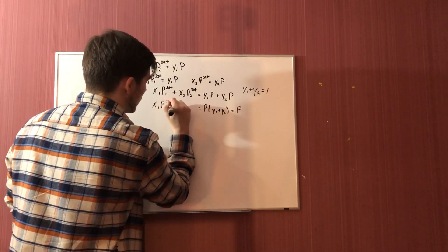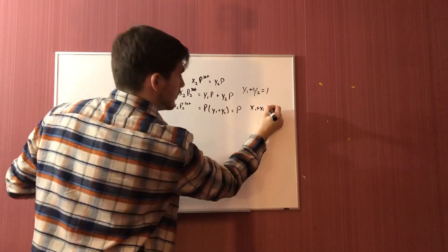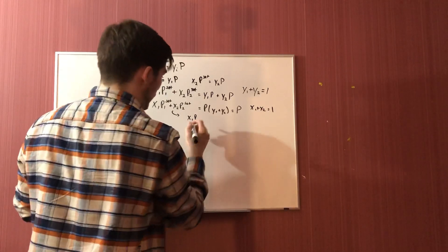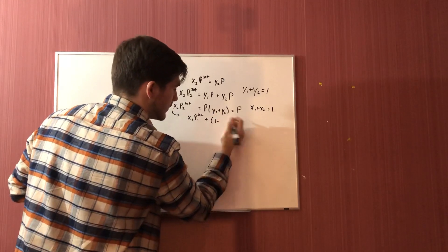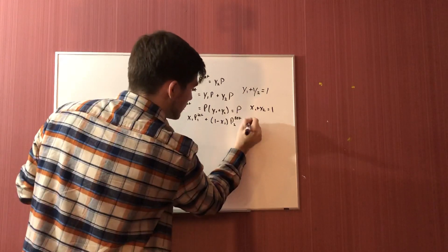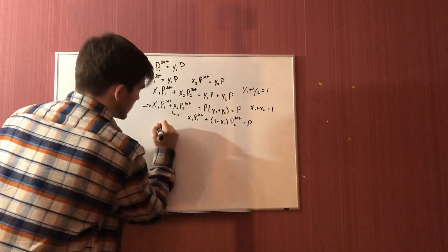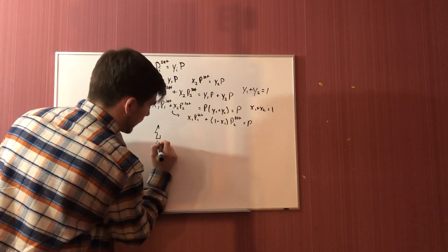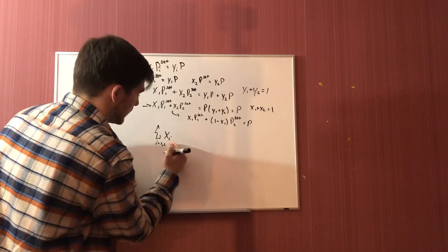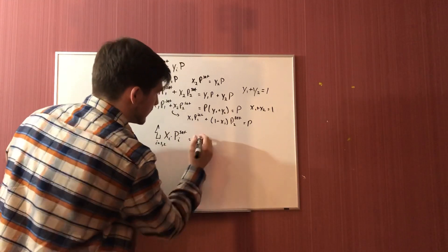We know the liquid mole fractions and can find the saturation vapor pressure with the Antoine equation, and we know the total pressure. We don't know the vapor mole fractions, but we know they add up to one, so we can factor out P and replace Y1 plus Y2 with their summation, which simply equals P. We can also write the left side as the mole fraction of liquid component one times its saturation vapor pressure plus one minus that mole fraction times the saturation vapor pressure of component two, still equal to the total pressure. This left side can be written as a summation over all components i of the liquid mole fraction of component i times its saturation vapor pressure, and that summation equals the total pressure.